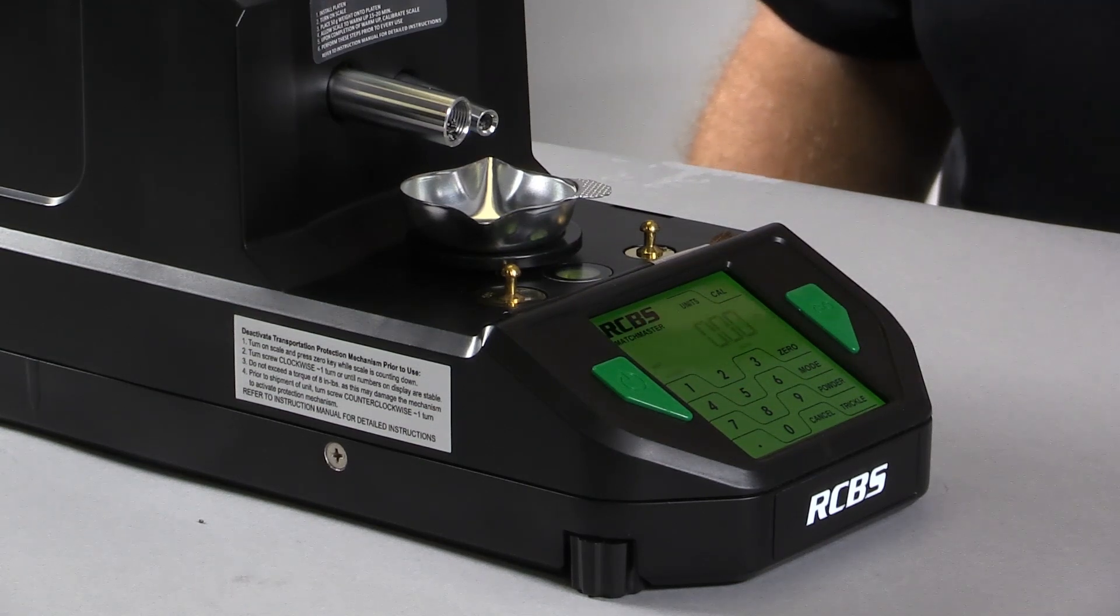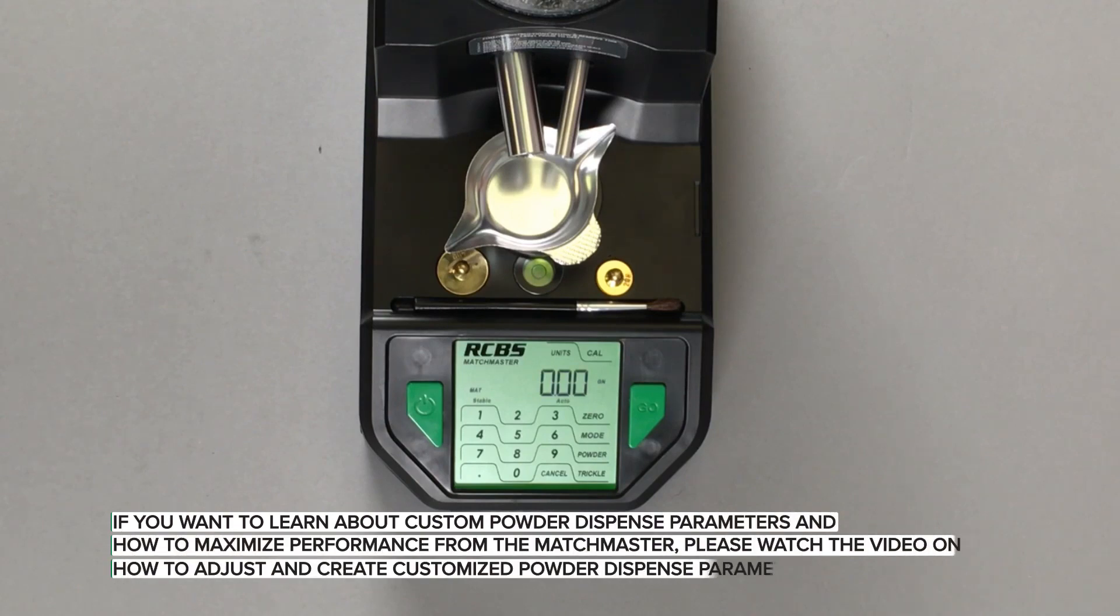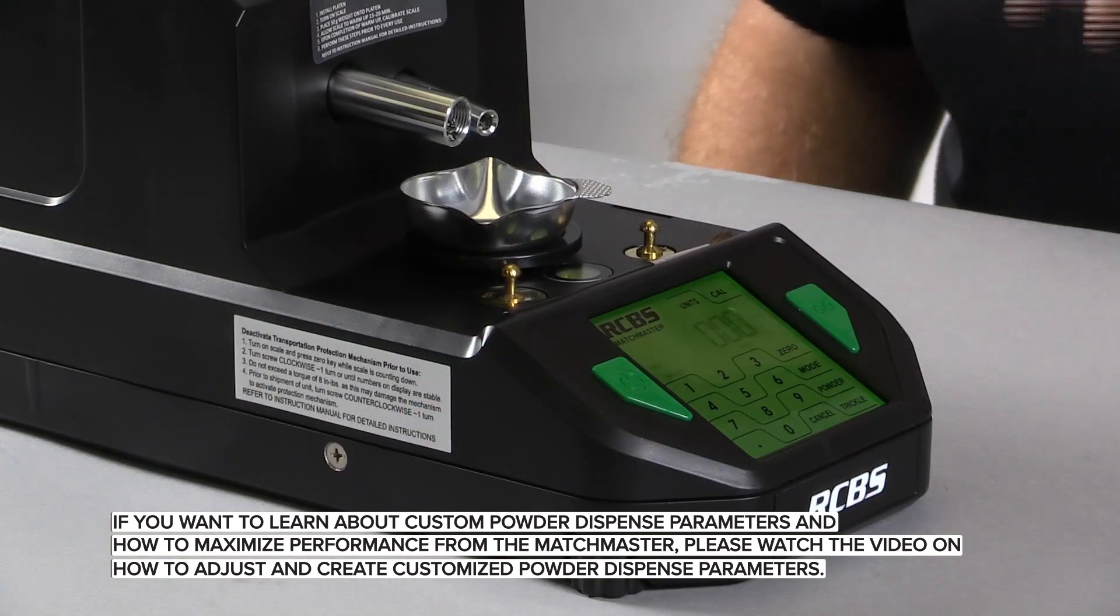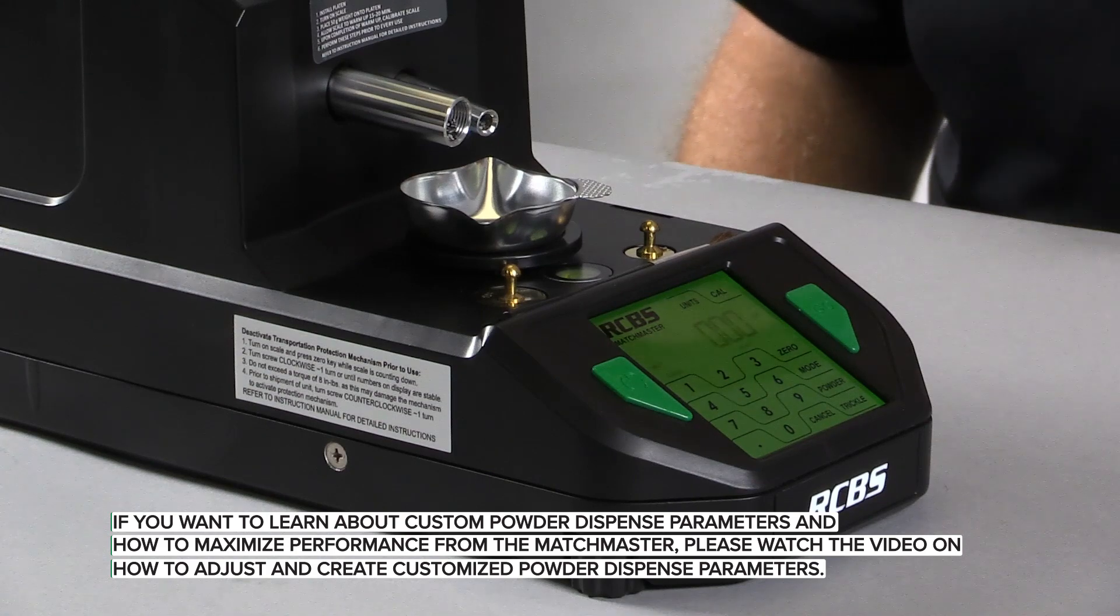Your powder dispense speed one will have the slowest dispense rate, while powder dispense speed four will have the fastest dispense rate. These four default powder dispense speed settings are designed to work in either standard or match mode, and they each have different sets of parameters depending if it is in standard or match mode. It is important to note that each powder dispense speed works with different types of powders a little bit differently.